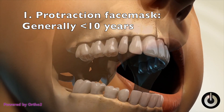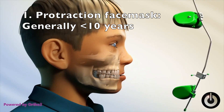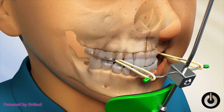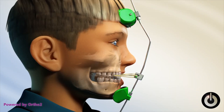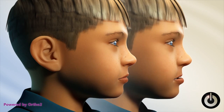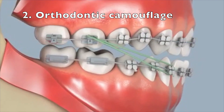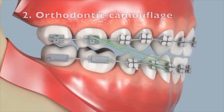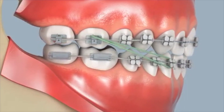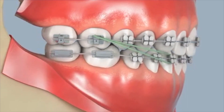There are four main treatment options. First, growth modification via a protraction face mask, which is only worn outside sociable hours — so at home and at night — which develops and brings the upper jaw forwards and is thought to restrict the growth of the lower jaw. The second option is orthodontic camouflage: top and bottom braces to hide as much as possible that relationship with the jaws. That won't do anything to improve the facial appearance in profile or on smiling, but it can get the teeth the right way around.